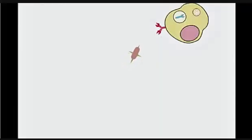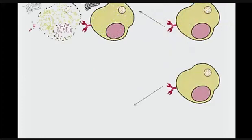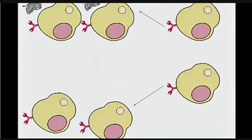The second phase is the effector phase. The specific B-cell encounters the same pathogen, engulfs it, and fragments it into antigen fragments, which it presents on its surface using the MHC2 protein. The helper T-cell then binds to the B-cell, releasing interleukin-2, which stimulates the B-cell to proliferate and differentiate into plasma B-cells and memory B-cells.